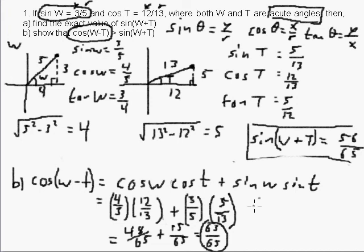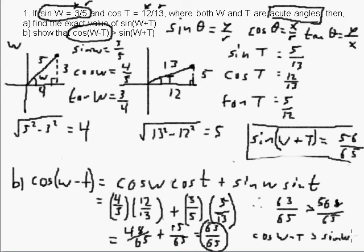So, therefore, 63 over 65 is greater than 56 over 65. So, cos of w minus t is greater than sine of w plus t.